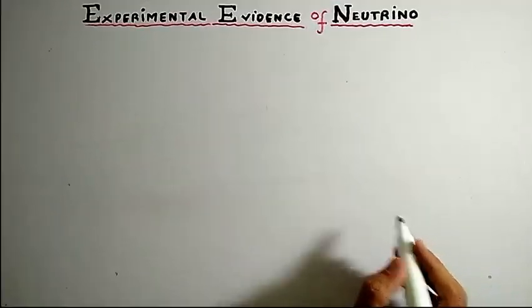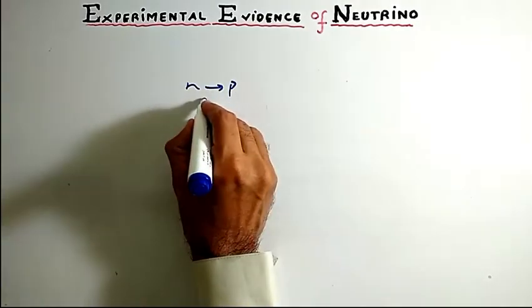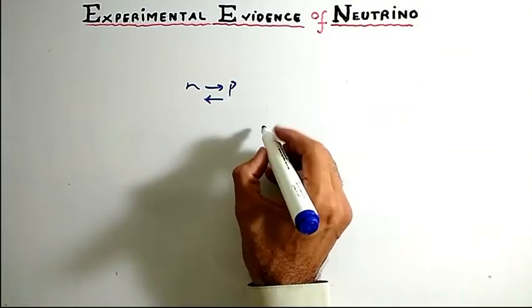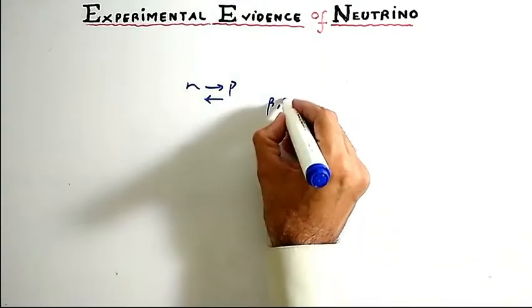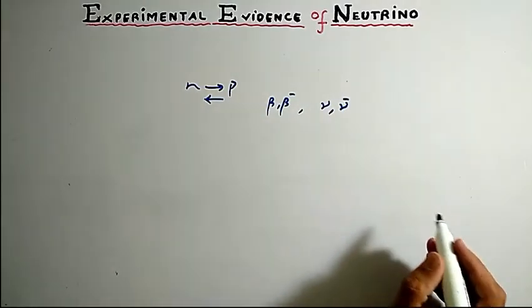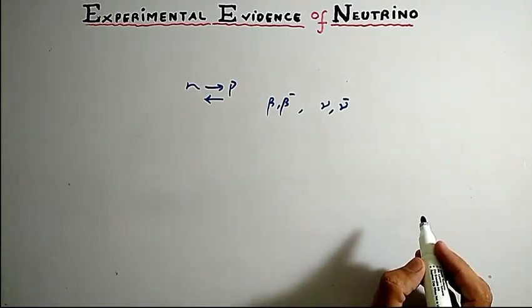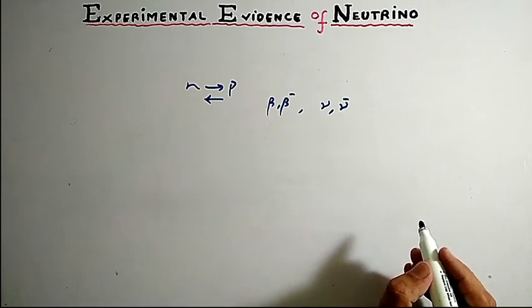Students, we know that according to Fermi theory of beta decay, a neutron changes to a proton and emission of beta particles and neutrino. Today we talk about experimental evidence of neutrino.